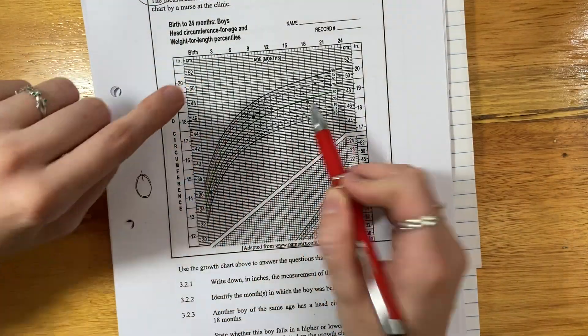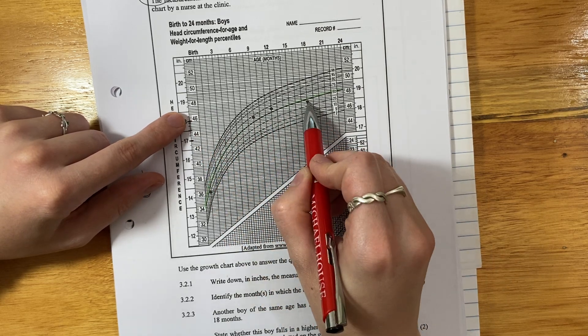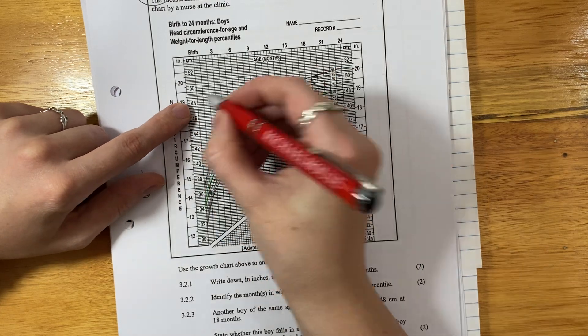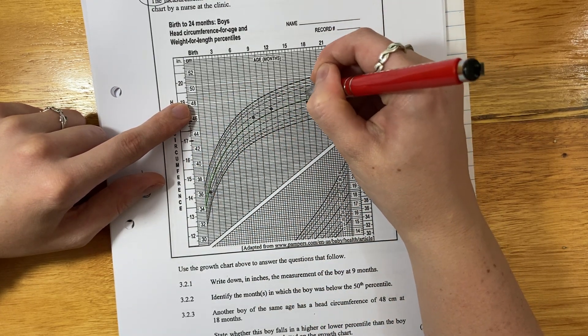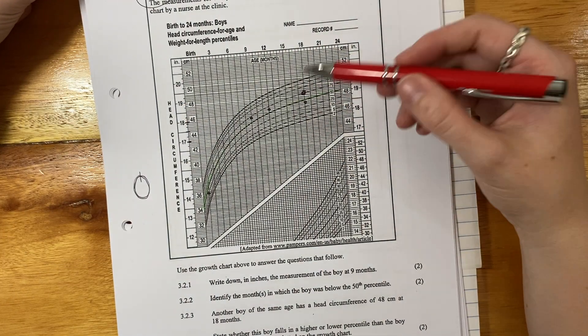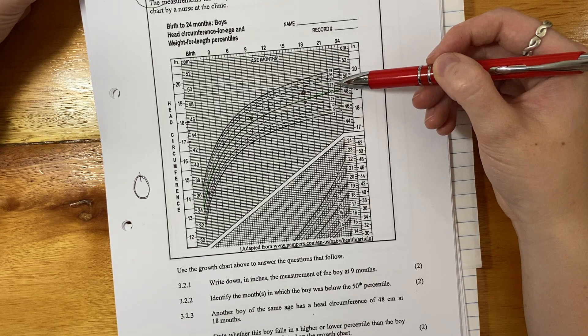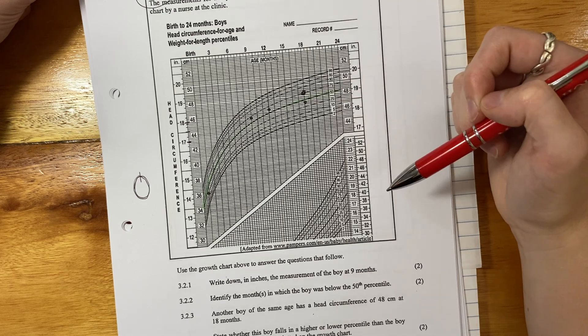So our little guy at 18 months, right, the one that was plotted here, is sitting below the 50th percentile, but he's also sitting kind of at 47. If we had another little guy sitting at 48 at 18 months, he'd be sitting like over here. Okay? We can clearly see that that's above, right, the 50th percentile, and it's sitting slap bang on the 75th percentile, right? If you go along that line, 75th percentile.